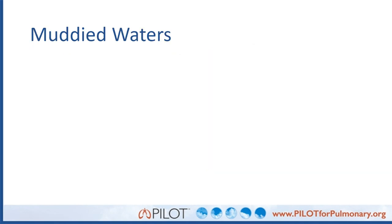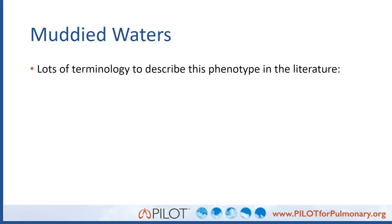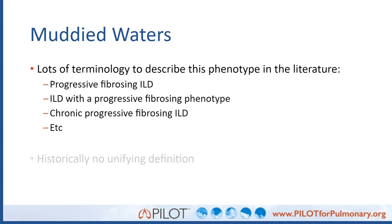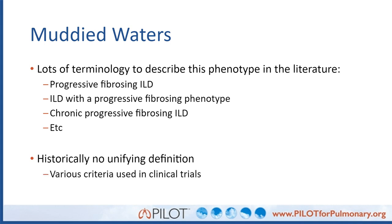Up until recently, there have been a lot of muddied waters in terms of terminology — both in the literature and in clinical practice. We've seen terms like progressive fibrosing ILD and ILD of the progressive fibrosing phenotype, among others. I personally have used probably every single one of these at some point, both in manuscripts and in clinical practice. Unfortunately, up until now, we really had no unifying definition for this progressive fibrosing phenotype, and amongst clinical trials, we've seen various criteria used to define and describe this disease.